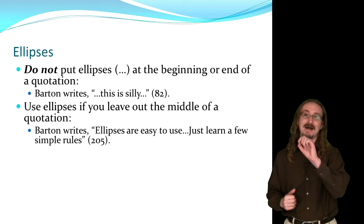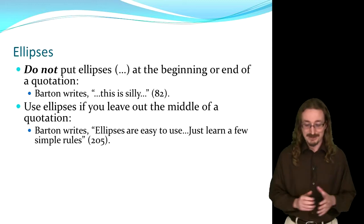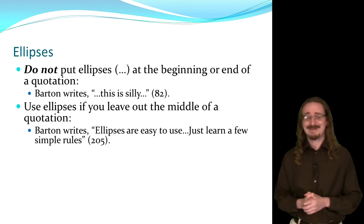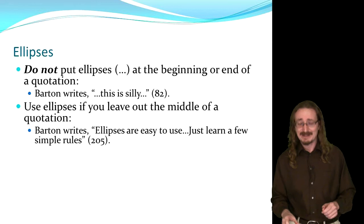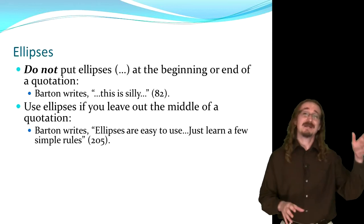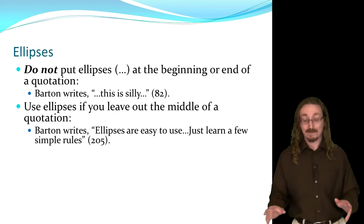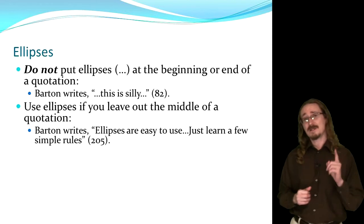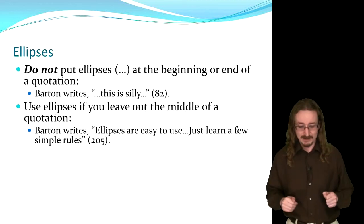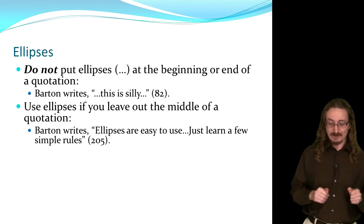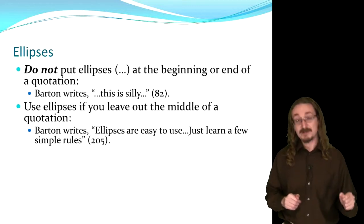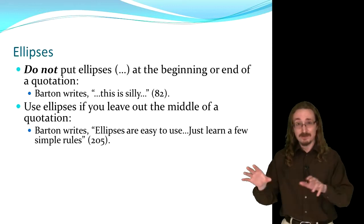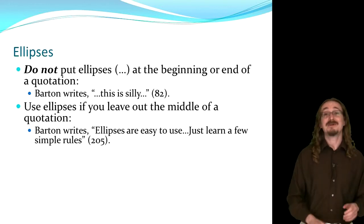Ellipses — the dot dot dot — are generally pretty easy to use, but some students get confused and think they need to put them before or after a quotation. You don't need to do that. Everybody knows if you have a little quotation, obviously that's not the whole book — they know something came before and after it. But if you do use ellipses, use them if you take a piece out of the middle of the quotation. For example: 'Barton writes, "ellipses are easy to use... just learn a few simple rules."' So I took something out between those two parts and I want to let the reader know.